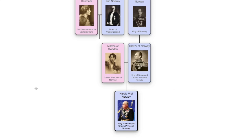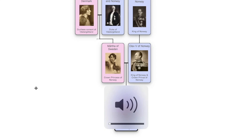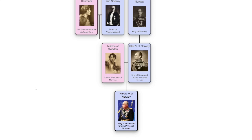We'll start from Harald V, the current King of Norway. A member of the House of Glücksburg like Margaret, he became the sovereign of the Kingdom of Norway in 1991. He has two children from his marriage with Sonja Haraldsen, a commoner — Princess Martha Louise and Crown Prince Haakon. Both are married, making Harald grandfather to five children in total.